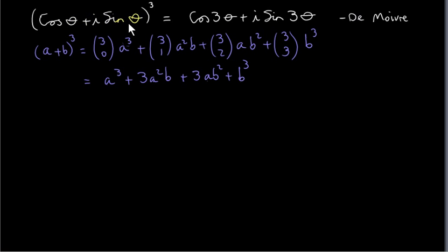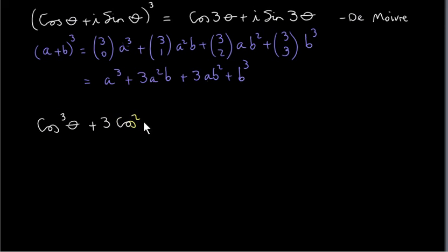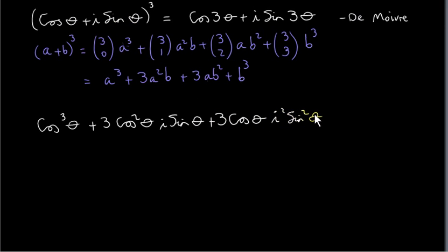Applying this to (cos θ + i sin θ)³: a is cos θ, so we cube it to get cos³θ. Then we have plus 3 times cos²θ multiplied by i sin θ. Then plus 3 times cos θ multiplied by i² sin²θ. And finally the second term cubed: (i sin θ)³ = i³ sin³θ. We cube each factor since they are multiplied together.